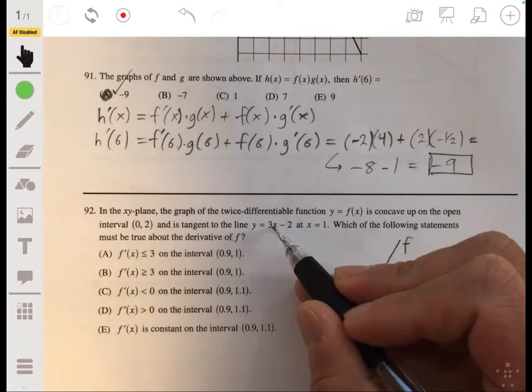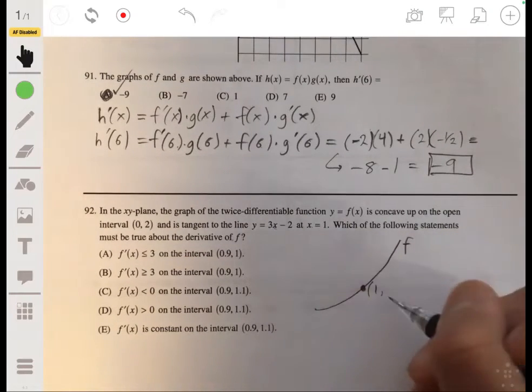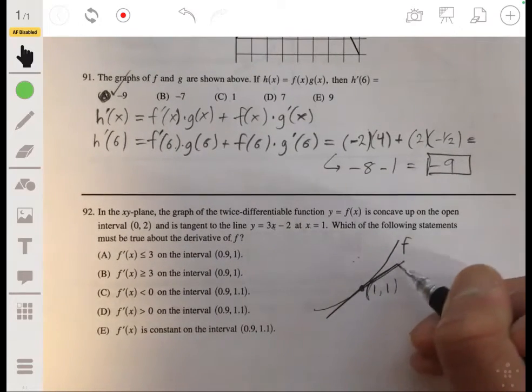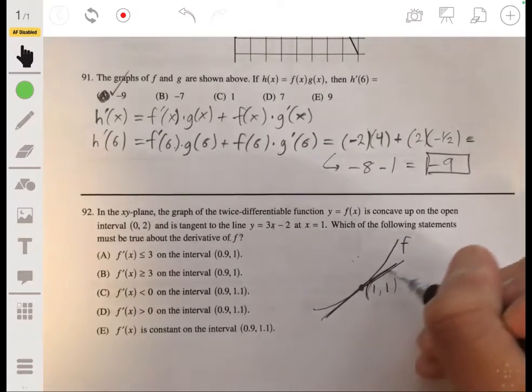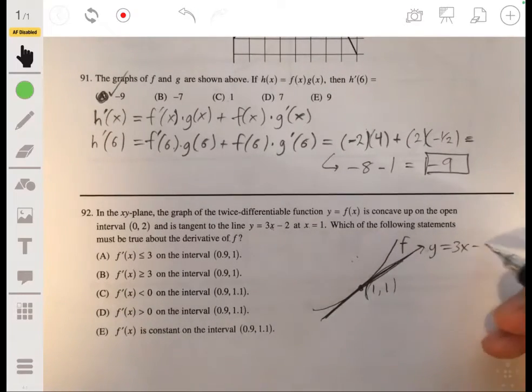Okay, so let's draw a little sketch of what this could look like. So remember, concave up is doing something like this. And the tangent line at x equals 1. So we plug in 1 into here. It would be 1, 3 minus 2. So they would intersect at 1, 1. The tangent line looks something like this at that point. It's not very good, but.